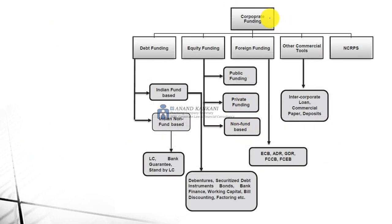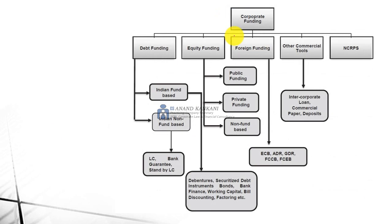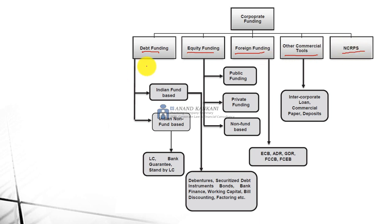So basically, this is corporate funding. The same index has been reshuffled: corporate funding can be done as debt funding, equity funding, foreign funding, other commercial tools, and then you have the non-convertible redeemable preference shares.